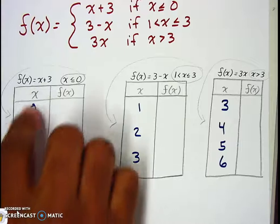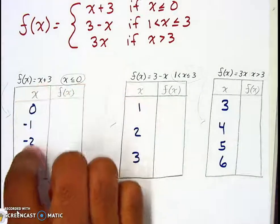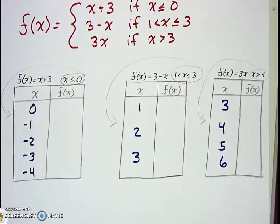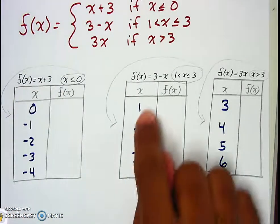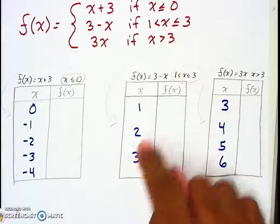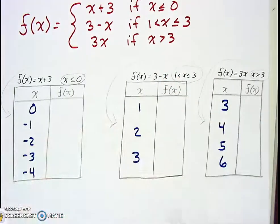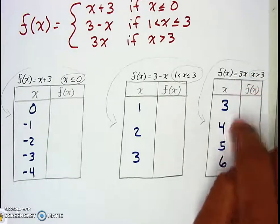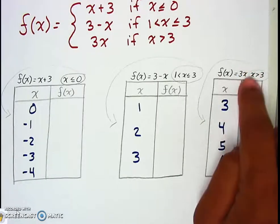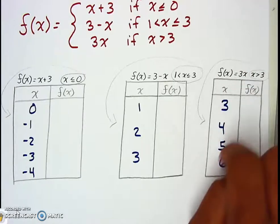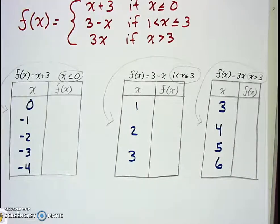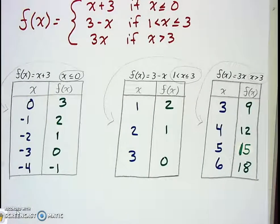Now we fill in all the values. We substitute zero, negative one, negative two, negative three, and negative four in for X in the first equation. Then we put one, two, and three in for X in the second. For the third, we substitute three, four, five, and six — so three times three, four times three, three times five, three times six — and simplify everything down.